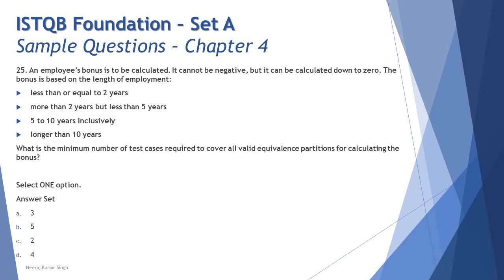An employee's bonus is to be calculated. It cannot be negative, but it can be calculated down to zero. The bonus is based on the length of the employment, and the various categories are: less than or equal to 2 years, more than 2 years but less than 5 years, 5 to 10 years inclusively, and longer than 10 years. Now this is where we really want to understand how exactly the values will be calculated.